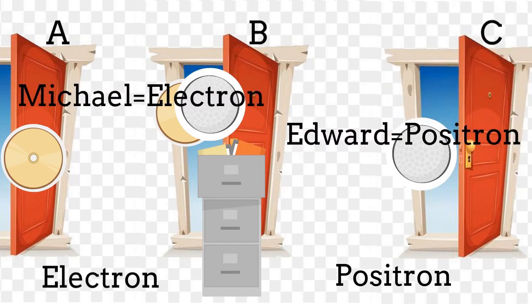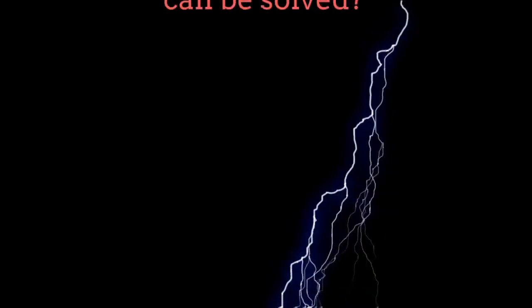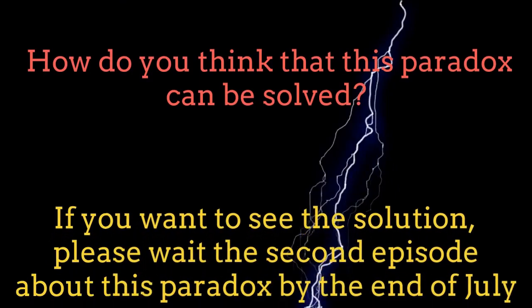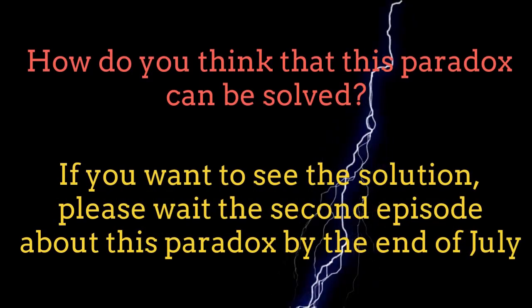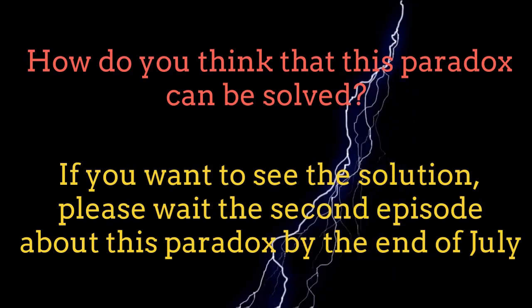Michael and Eduard's behavior is equivalent to the behavior of an electron-positron pair crossing through the same doors. The positron is the antiparticle of the electron. Then, if the electron meets the positron, they would annihilate for sure. However, the final patterns of detection suggest that both particles still cross the door B. The hardest paradox has been proved experimentally. How do you think that we can solve this paradox theoretically? Please wait for the solution by the end of July. Continue with us.